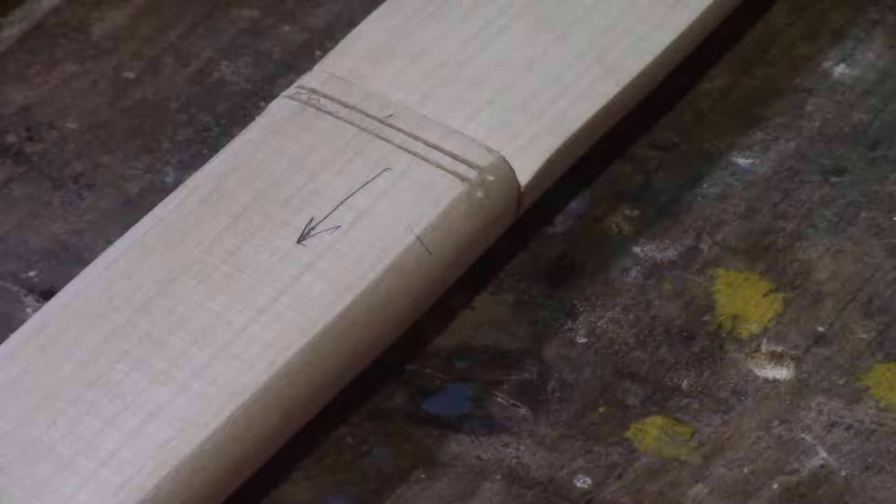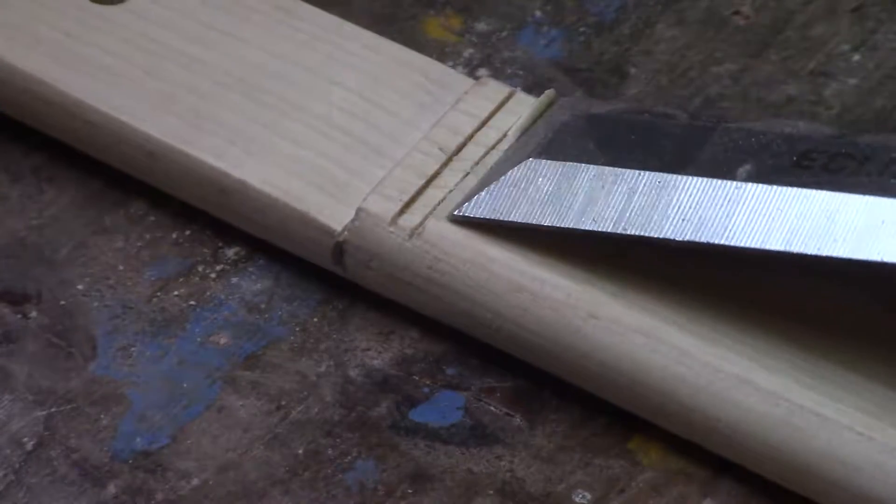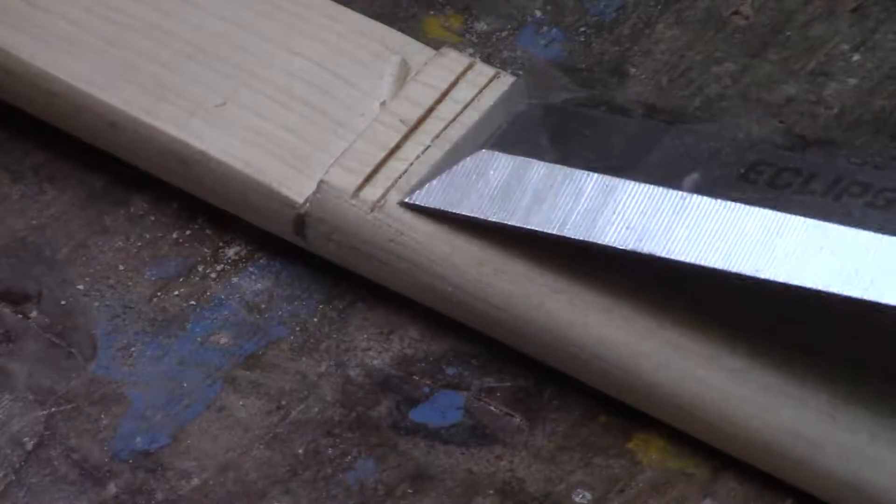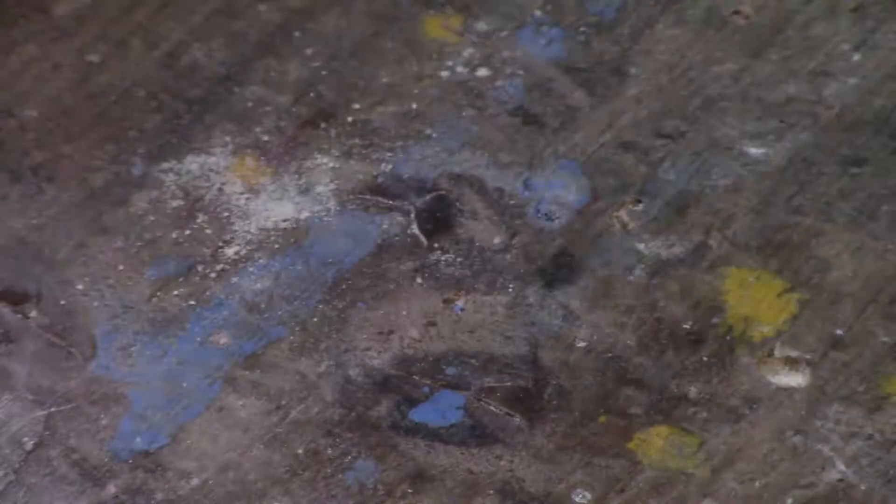So there's our two cuts for our nut line. Now we just take our chisel and push it to the far side, just taking off small amounts of material, just to give a bit of depth to the slot.